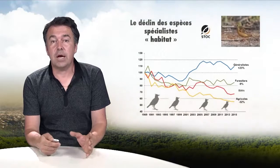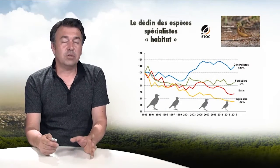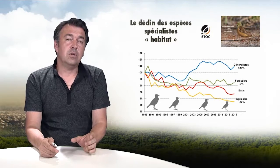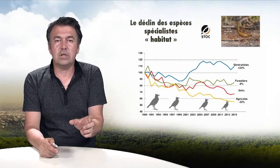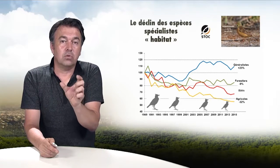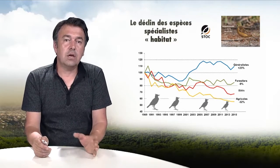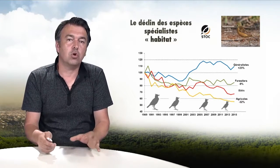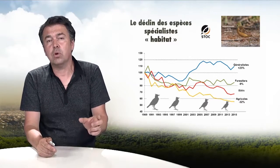Let us start with a general observation: the decline of specialized species within both animal and vegetal species in Europe as on other continents. A specialized species is one that has ecological resources — in terms of climate and diet — that are rather narrow, very specific, as compared to generalist species, which are more plastic and can use a great number of resources or live in varied climates.